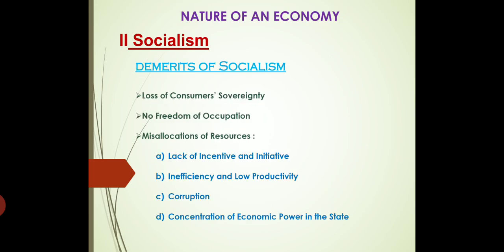Now let's move to the demerits of socialism. The biggest demerit is the loss of consumer sovereignty. This means consumers don't have the power to decide how to spend their money — whatever is provided by the government, they have to use that thing. They don't have freedom to consume as per their requirement or wish. Next is no freedom of occupation — whatever job is provided by the state, the society has to take that only. You cannot make any business of your own; you have to work on businesses supported by the government.